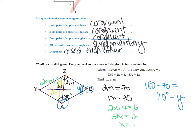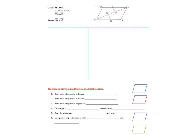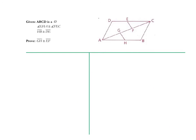Now we're going to actually do a proof — woo-hoo! Once again, the given is provided to break down information. The fact that it says ABCD is a parallelogram — what are some things we know? Remember, you can't just skip it. You still have to mark the diagrams and prove it.